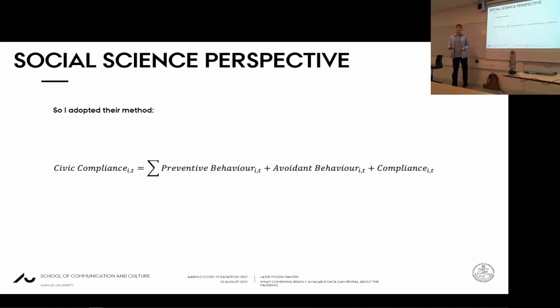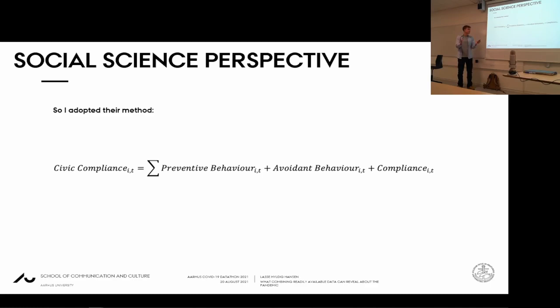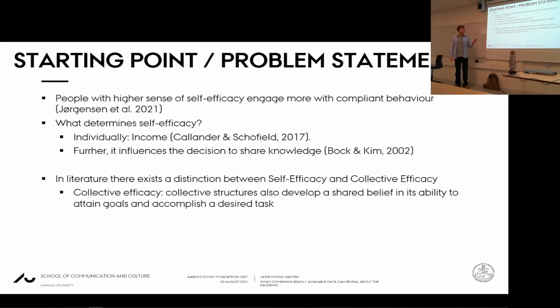Self-efficacy was the most important psychological effect in determining a person's level of compliance in the eight European countries. From their analysis, I determined that institutional trust and self-efficacy were the two most important psychological correlates for compliance. I got their data through my counselor and made a civic compliance index from their questions. I added all preventive behavior items, all avoidant behavior items, and a general compliance question, and made it into an index — using their study as a baseline, which had about 26,000 responses.